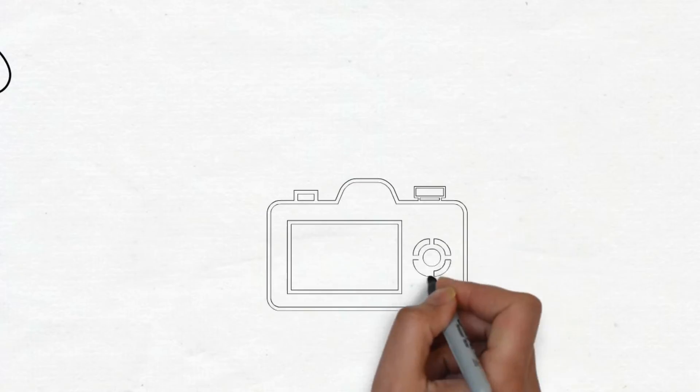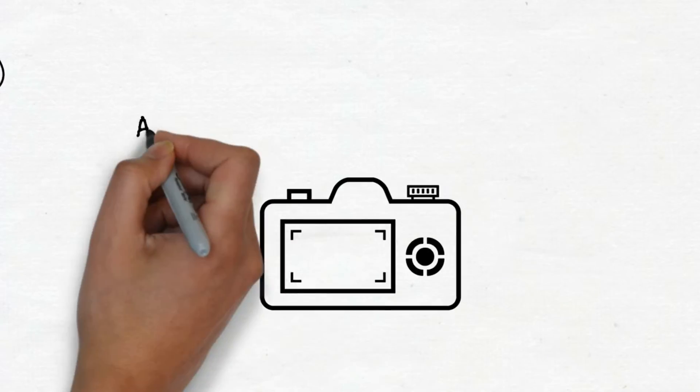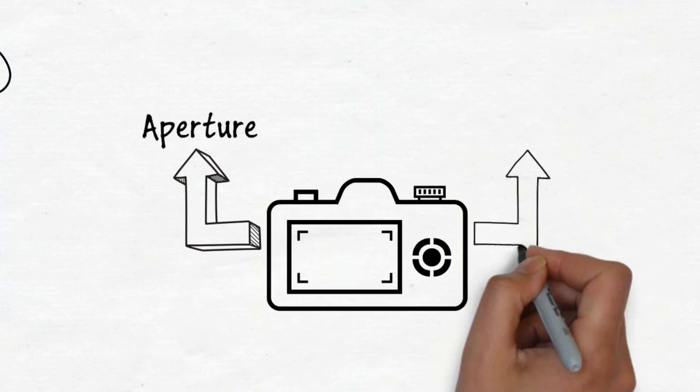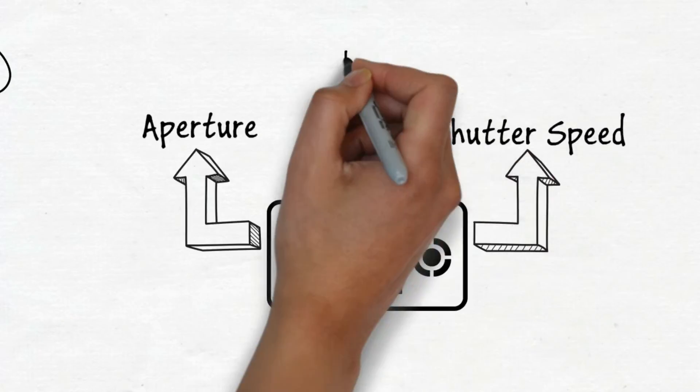The basic features of your camera you need to know are: one, aperture; two, shutter speed; and third is ISO.